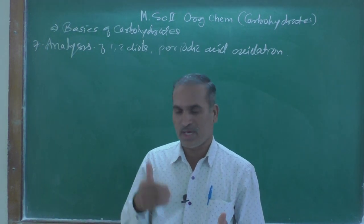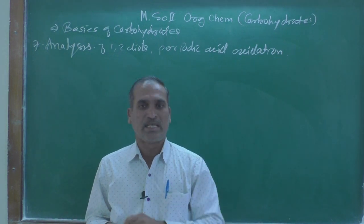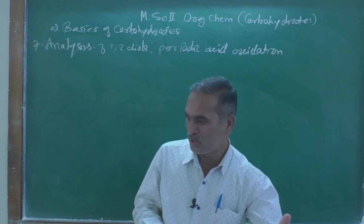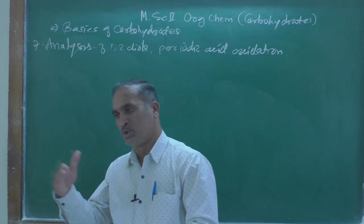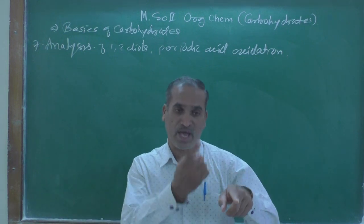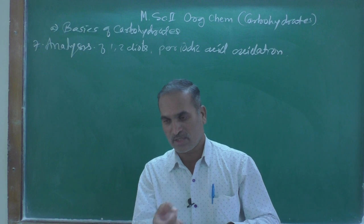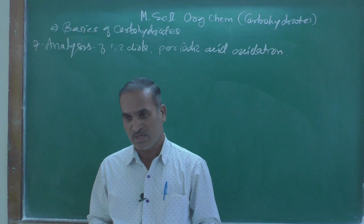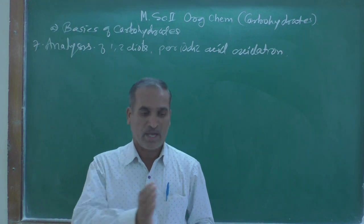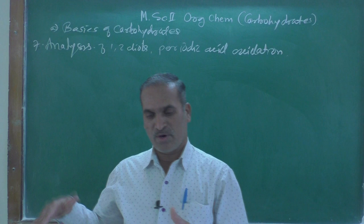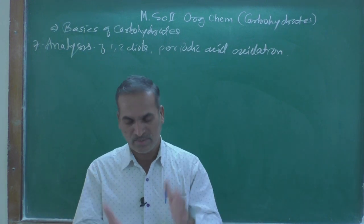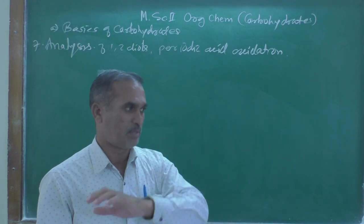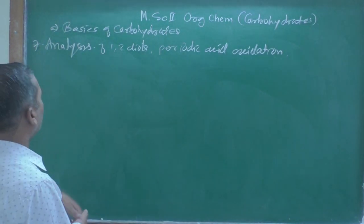The process of chain elongation is known as Kiliani synthesis. From that synthesis we can elongate trioses into tetroses, tetroses into pentoses, pentoses into hexoses, and so on. The reagents used for that elongation we will see later on. Here we are talking about the chemical properties of glucose.